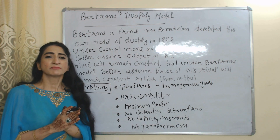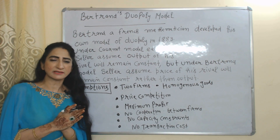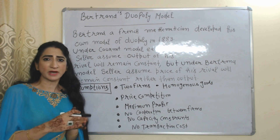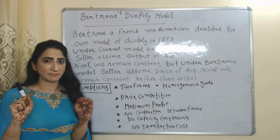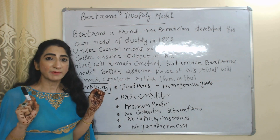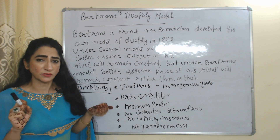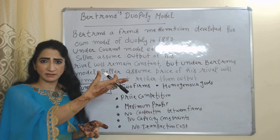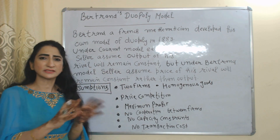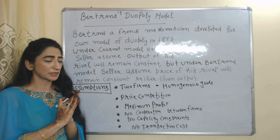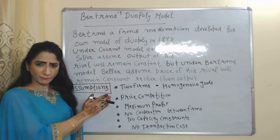This model is very different from the Cournot model. In the Cournot model, sellers assume the output of their rival will remain constant, but in the Bertrand model, sellers assume the prices of their rival will remain constant rather than output.